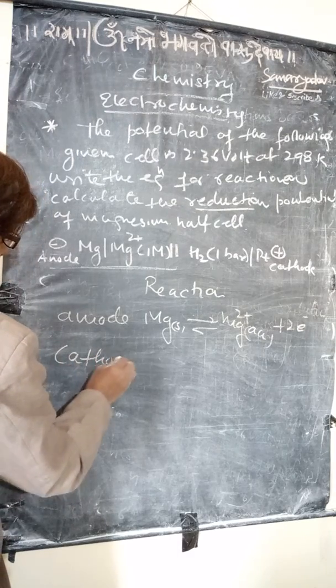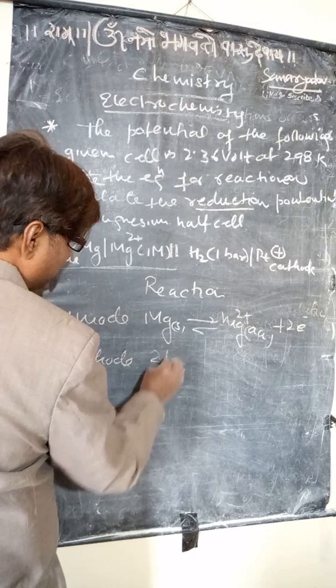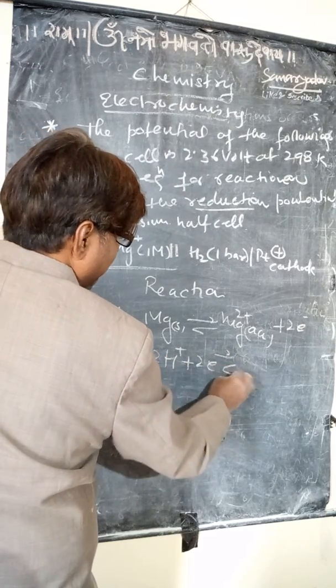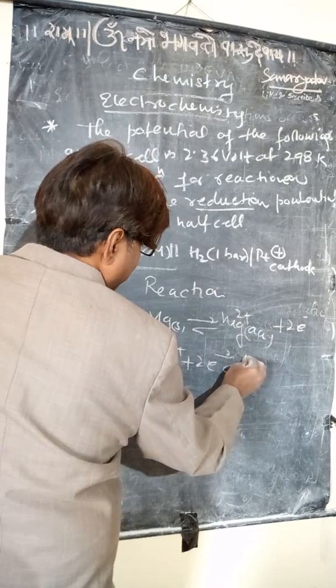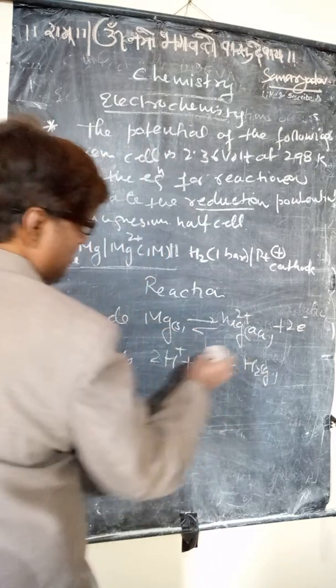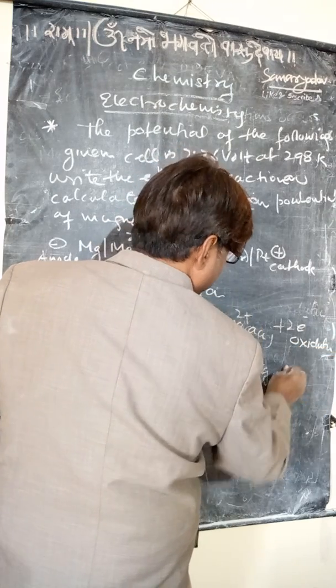At the cathode: 2H⁺ plus 2 electrons gives H₂ gas. The anode reaction is oxidation and the cathode reaction is reduction.